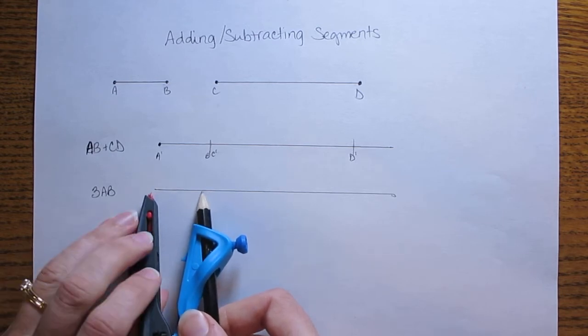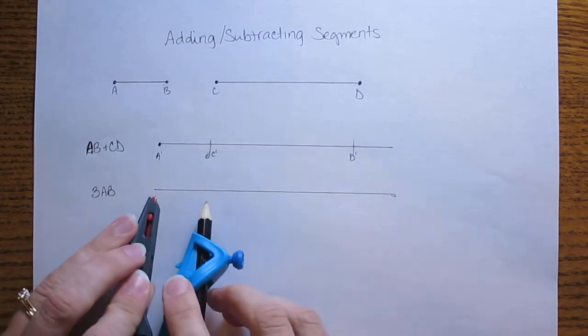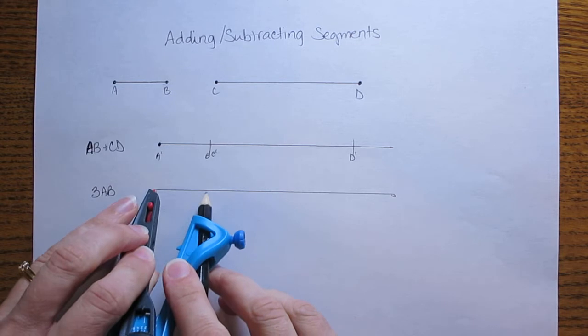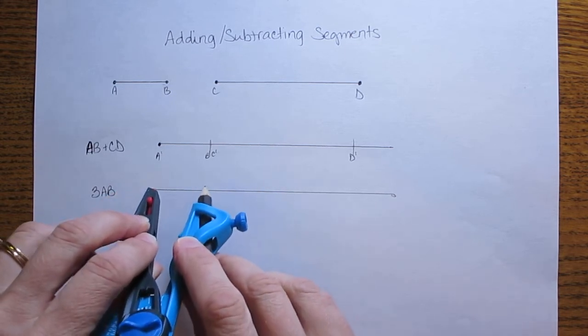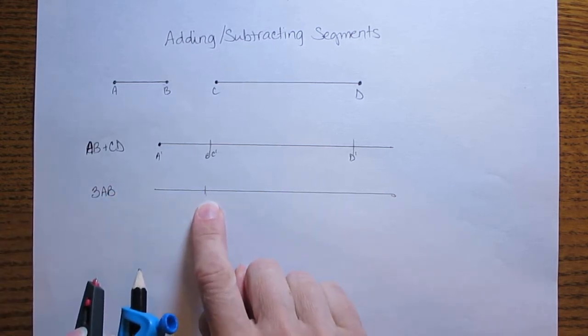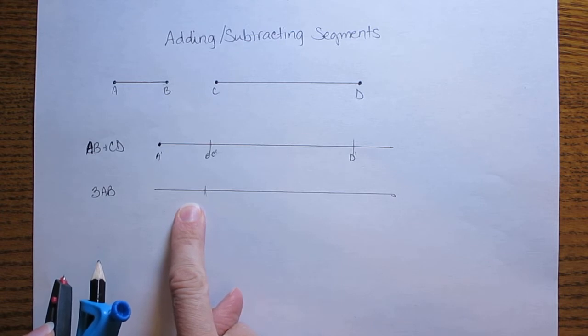Take that to your segment here. Put the pointed end at the start of your segment. Use your compass to make a mark. Now I've just copied AB once. I'm going to do that two more times.